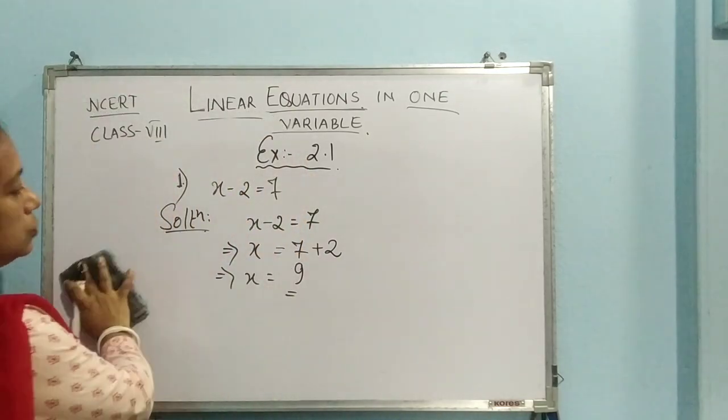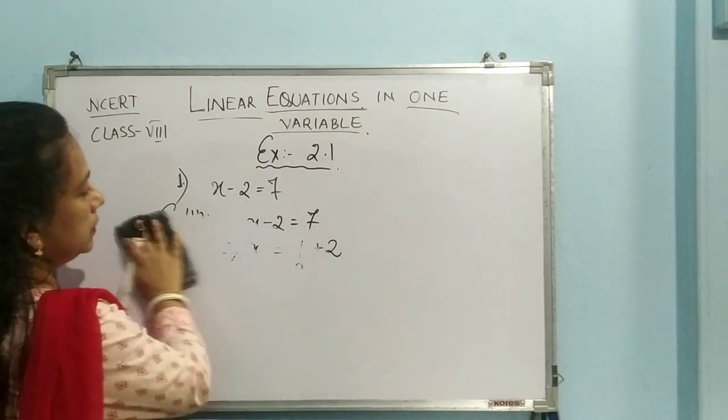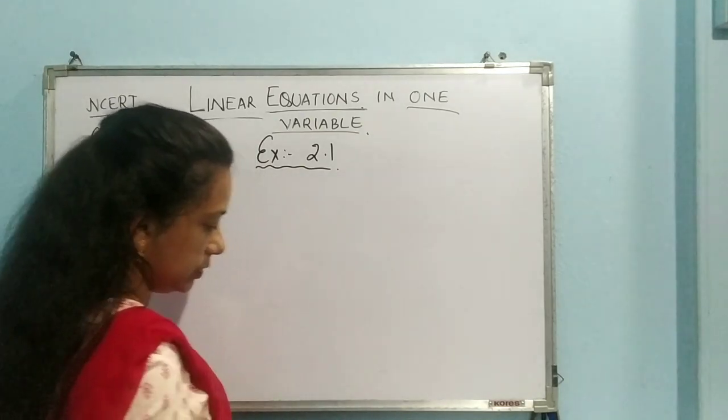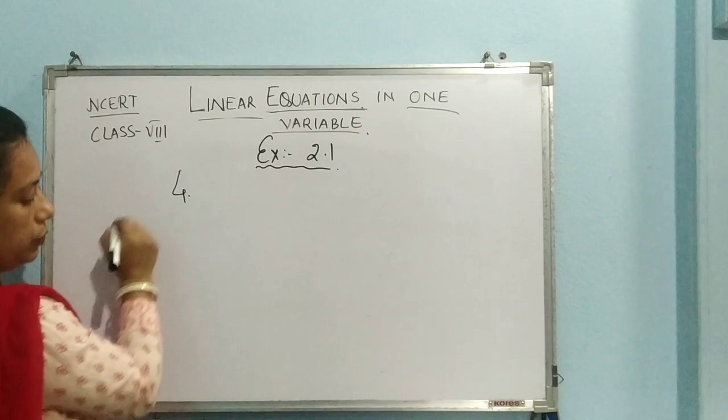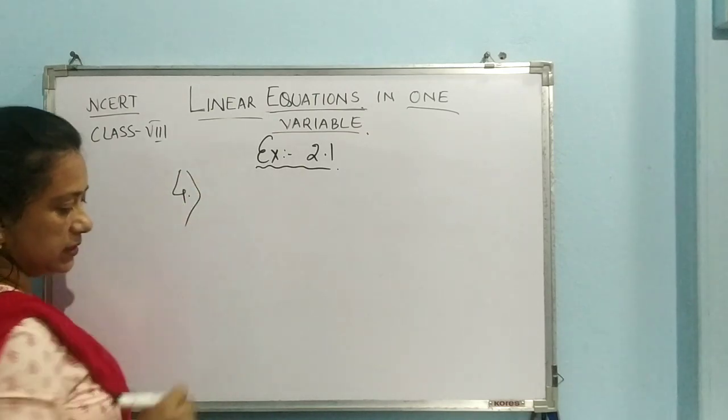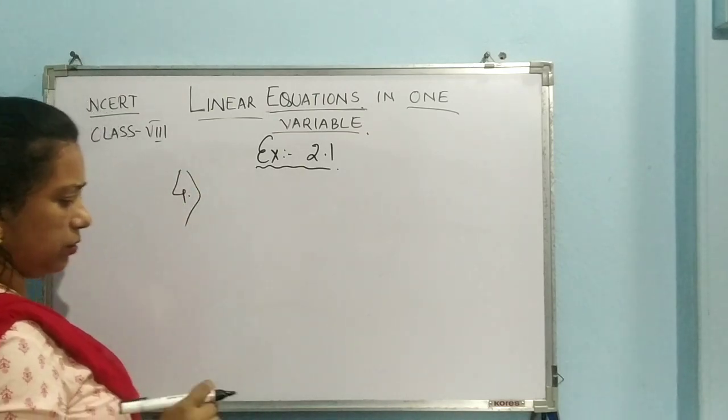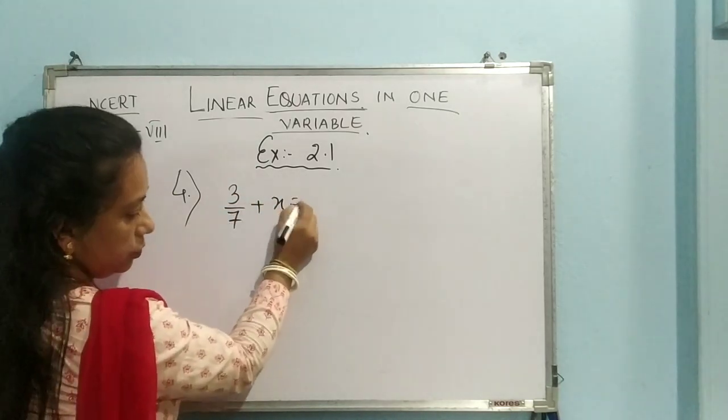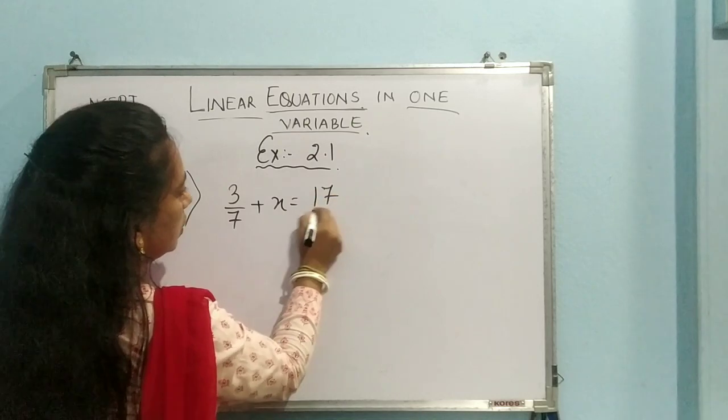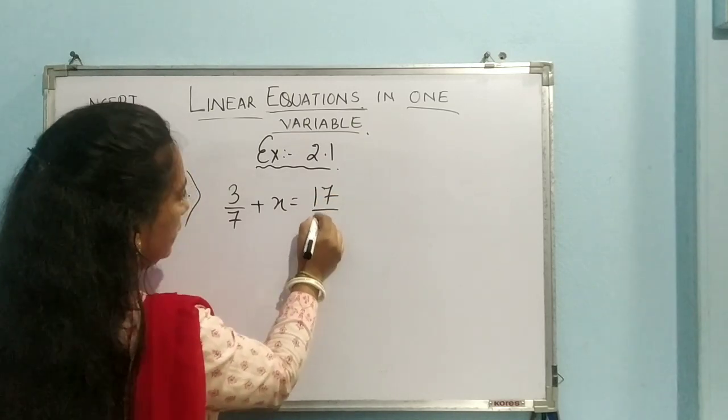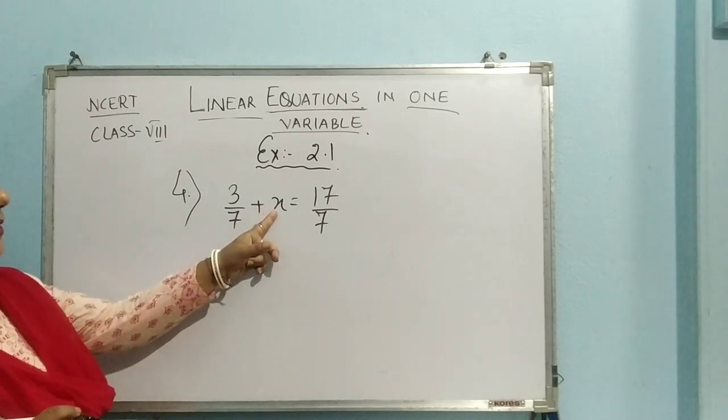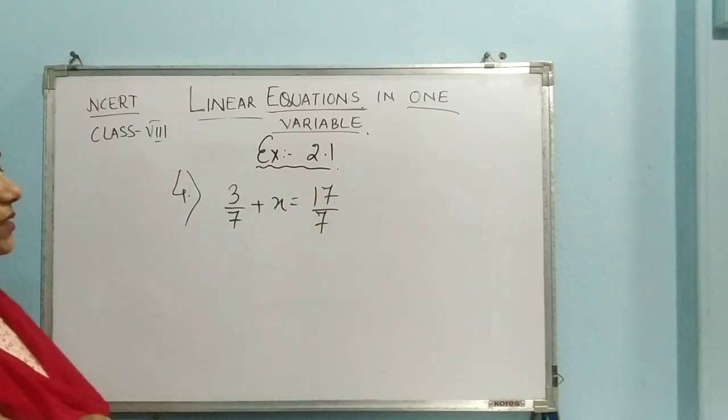Now, let us do some other questions also. I will be taking the next question. Suppose question number 4. Question number 2, 3, these are all easy, so very simple sums, so you can do it on your own. So I am going with the fourth one, 17 by 7. So this is the question, 3 by 7 plus x equal to 17 by 7.